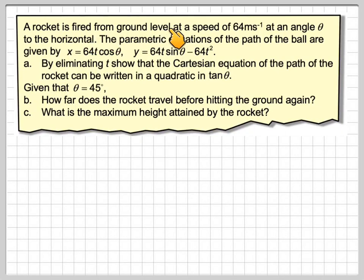A rocket is fired from ground level at a speed of 64 metres per second at an angle θ to the horizontal. The parametric equations of the path of the ball are given by x = 64t cos θ and y = 64t sin θ - 64t².